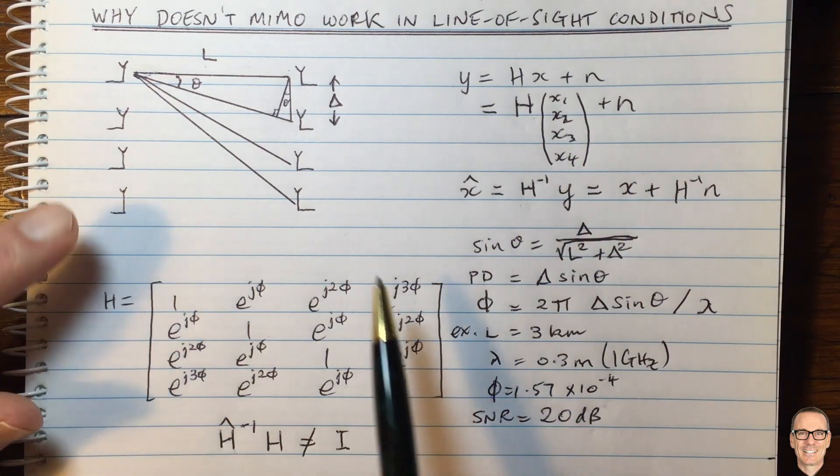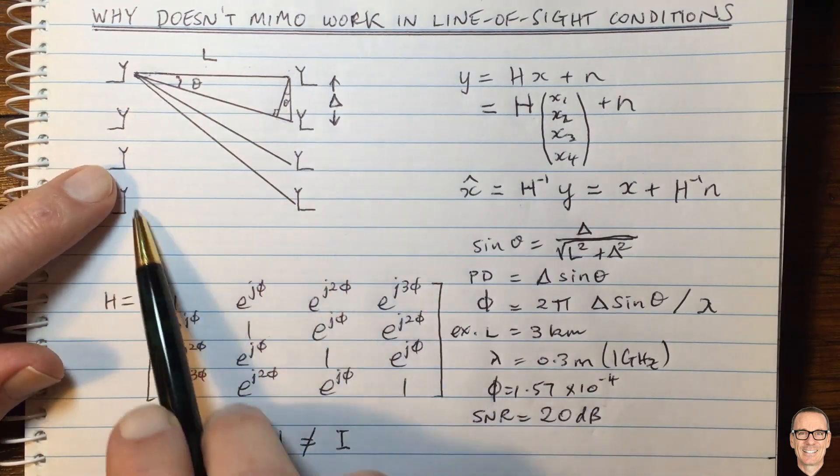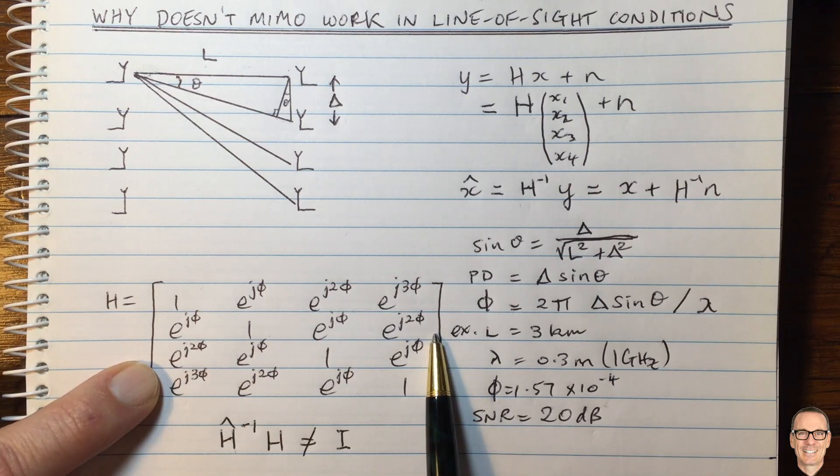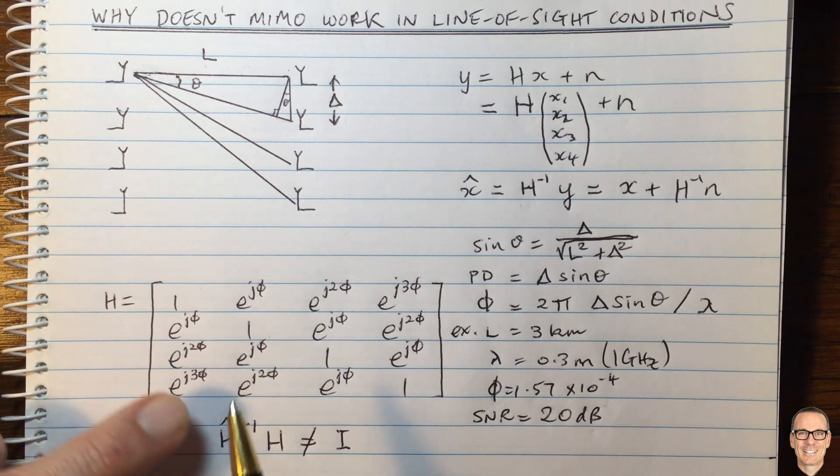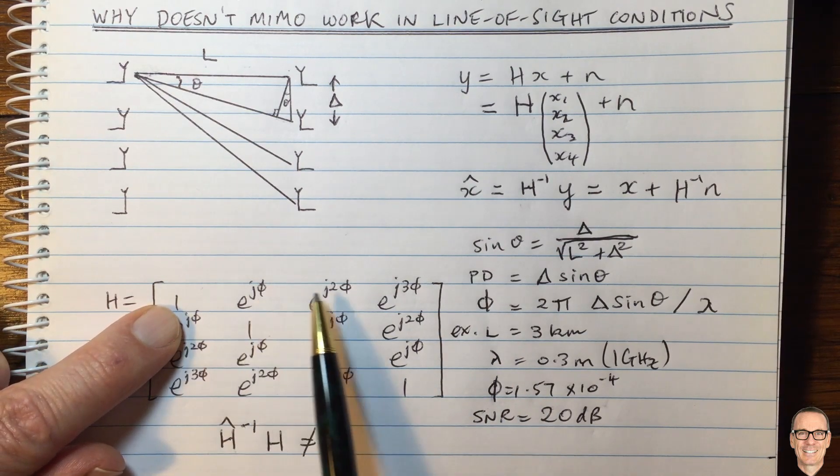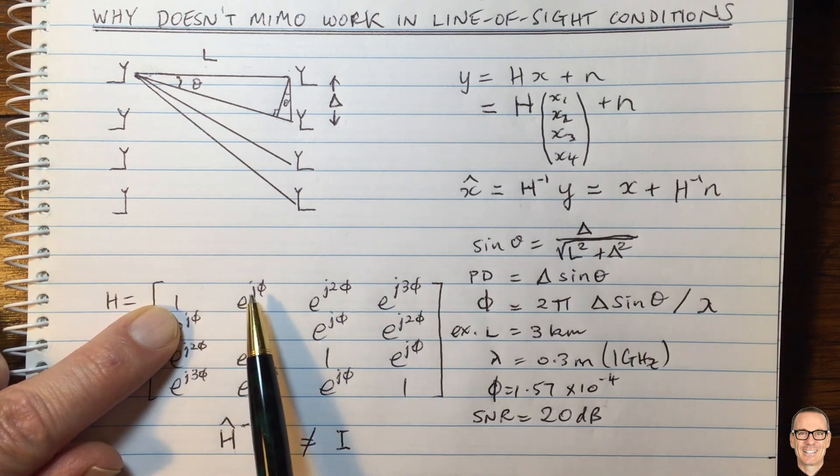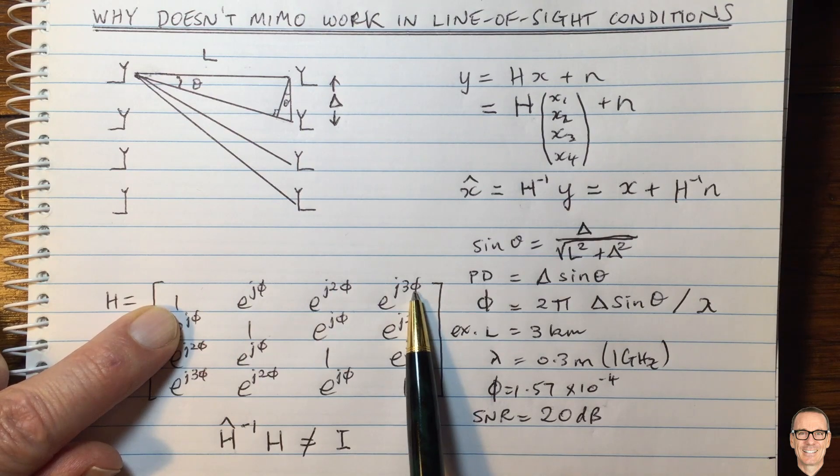Now, this is not the case in channels that have multiple paths. When there's multiple paths, the H matrix does not have this structure. It means that the inverse is not so reliant on these phase changes, because the gains are going to be different, as well as the phases being considerably different.